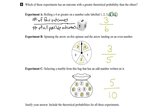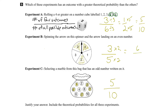We've figured out the theoretical probability for each experiment. Now we have to compare these ratios. Since they are fractions, we need a common denominator. The first one, 3 out of 6, simplifies to 1 half by dividing top and bottom by 3. Looking at the denominators 2, 5, and 10, the common denominator is 10. Multiplying 1/2 by 5 gives 5 tenths; multiplying 3/5 by 2 gives 6 tenths; and 5/10 stays as is.